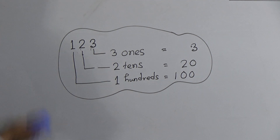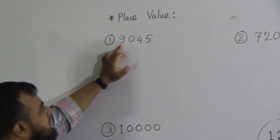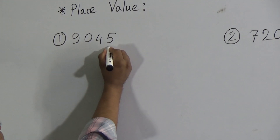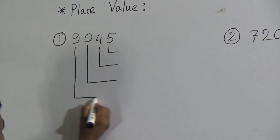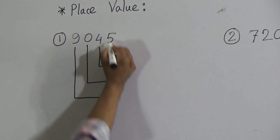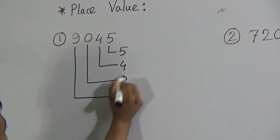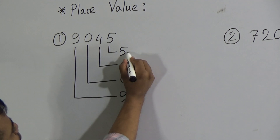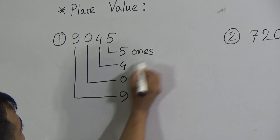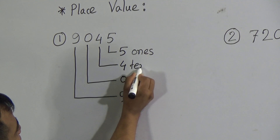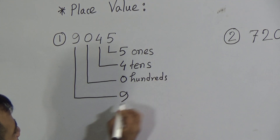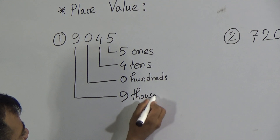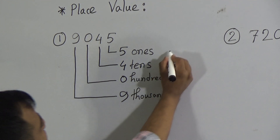Now let's solve three problems on the board. The first number is 9045. Draw the lines, keeping enough gap between them. Write the digits from right to left: 5 in ones place, 4 in tens place, 0 in hundreds place, and 9 in thousands place. Write the place value names: ones, tens, hundreds, thousands. Then give equal signs.